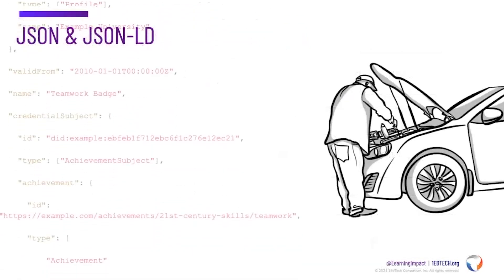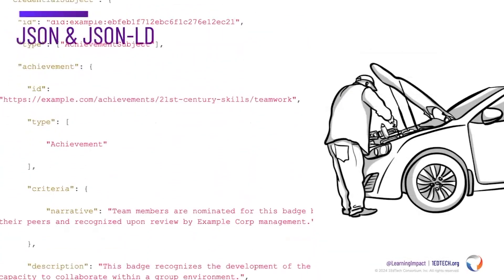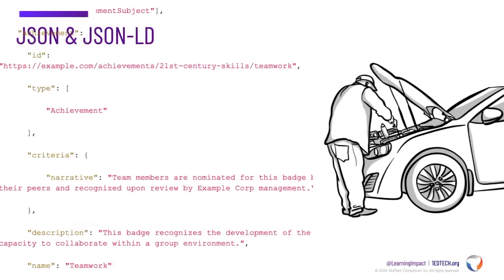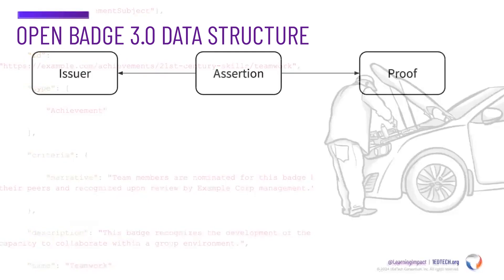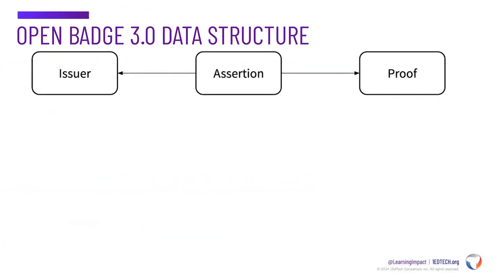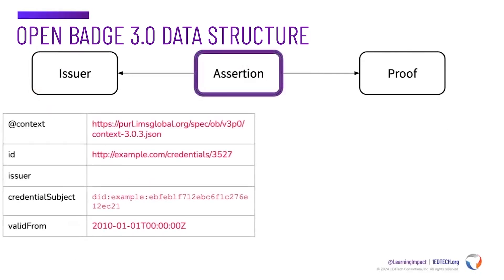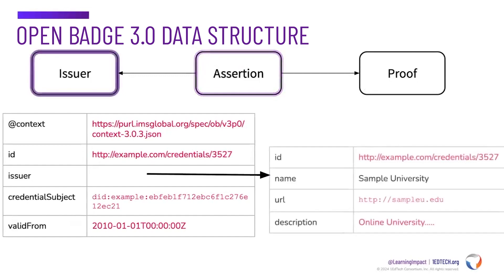OpenBadges are expressed using JSON or JSON-LD, allowing a consistent way for machines to be able to understand the credential data, as well as reference any linked data. Each building block in an OpenBadge is expressed using a series of required and optional data fields nested under the achievement credential, or assertion. The specification is also designed to be extensible, enabling organizations to add additional data fields to meet their unique needs.